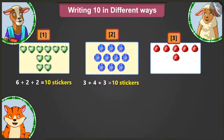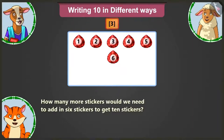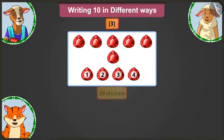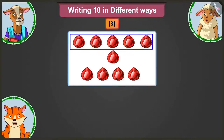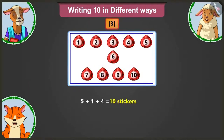Very good, Lily. Come on, Lily, now tell me how many stickers are there on the third card? There are one, two, three, four, five and six stickers. Billy, adding how many stickers to six stickers will make them ten stickers? Adding the numbers seven, eight, nine and ten — that is, adding four more stickers will make it ten stickers. Well done, Billy. Lily, now you tell me how will we write the sum of ten here? In this card, there are five in the first row, one in the second row and four stickers in the third row. So, here we will write five plus one plus four to make ten stickers.